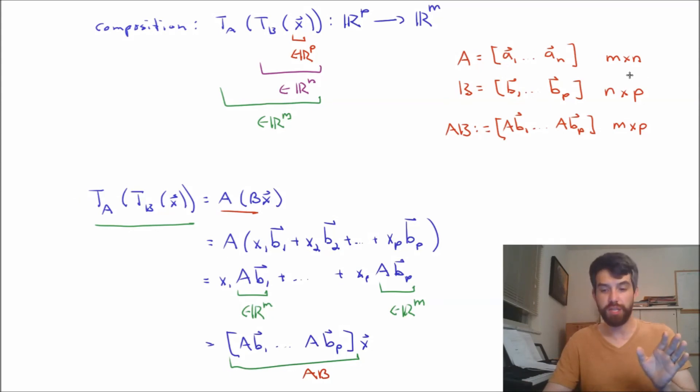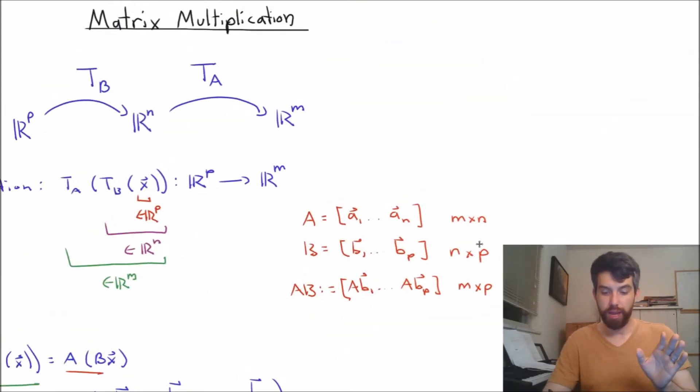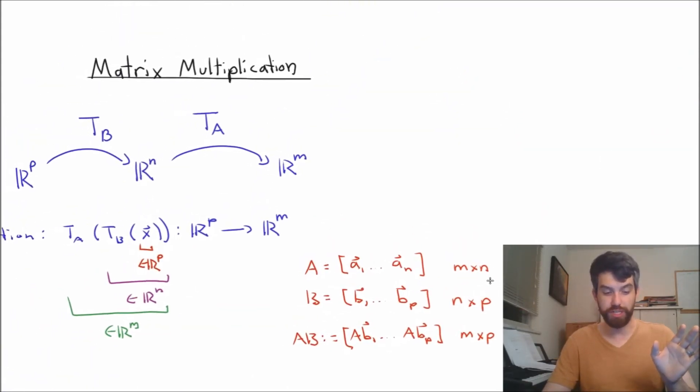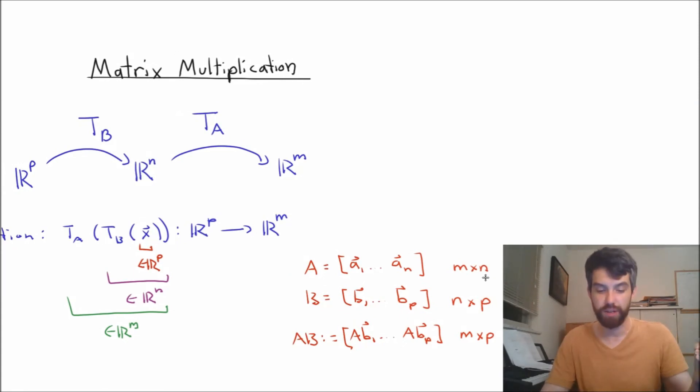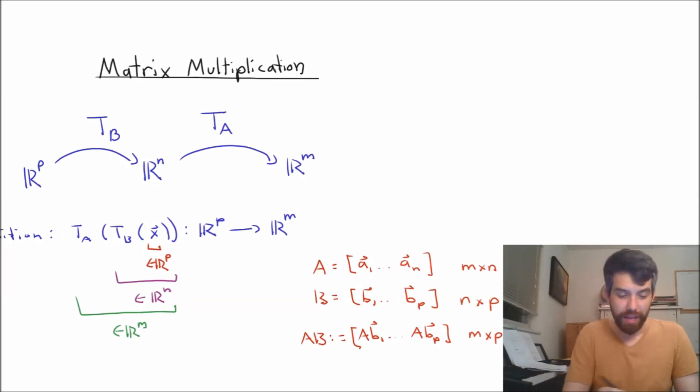Now, I want you to note that the sizes here are really important. In order for my transformation to even have made sense, it had to be that the sort of input of T_A was the same as the output of T_B. That is, it had to have this sort of central R^n that everything went through. Otherwise, just the very idea of a composition of transformation didn't make any sense.